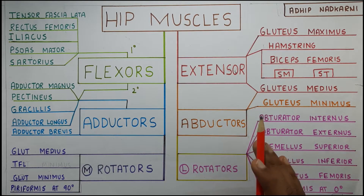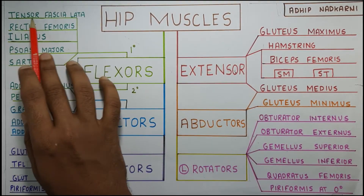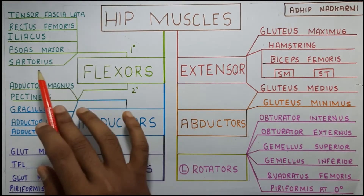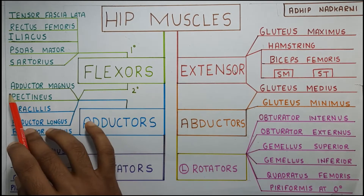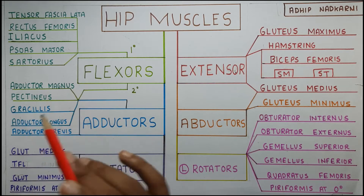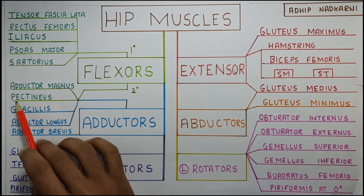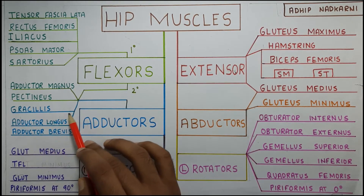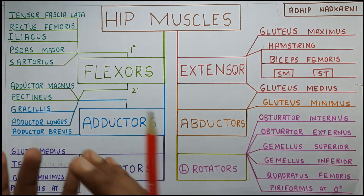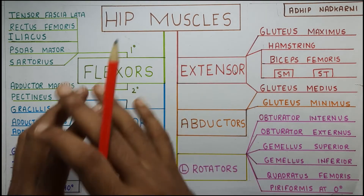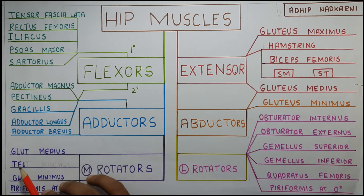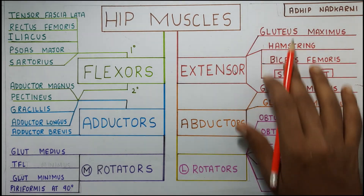Now let's look at the TRIPS muscles — the flexors. There is Tensor Fascia Latae, Rectus Femoris, Iliacus, and Psoas Major — these two combined are called Iliopsoas — and then Sartorius. The other flexors are Adductor Magnus and Pectineus. Under adductors, Adductor Magnus and Pectineus appear again because they change function with position. Then there is Gracilis, Adductor Longus, and Adductor Brevis. Don't worry about so many muscles — when we cover each in depth you'll retain the concepts much better; this mnemonic just helps you get the names quickly. Medial rotators are Gluteus Medius, TFL, Gluteus Minimus, and Piriformis.